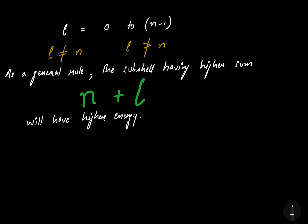Let's talk about the values of l. If the value of l is 0, it signifies the s subshell. When the value of l is 1, it represents the p subshell. When the value of l is 2, it represents the d subshell. And when the value of l is 3, it represents the f subshell.